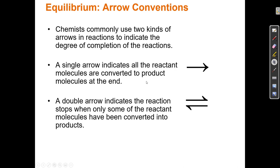In this video I'm going to cover an introduction to equilibrium. The first thing we have to look at when we talk about equilibrium is the convention that chemists use with the arrows. Generally when we have been depicting a reaction, we've drawn reactants on one side of an arrow, then a forward arrow, and products on the other side. An arrow that only has one direction — a single arrow — typically indicates that all of the reactant molecules are converted to product molecules at the end.